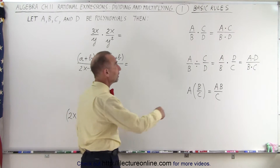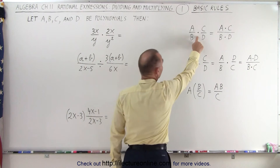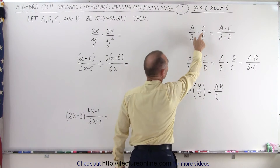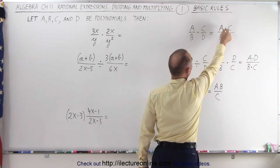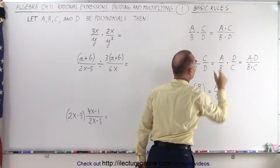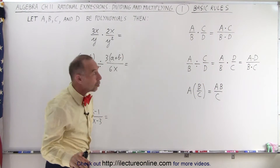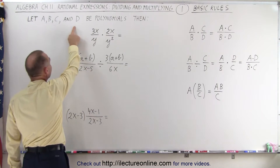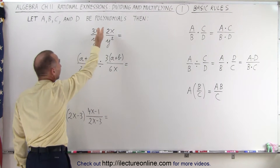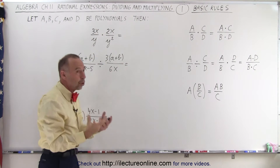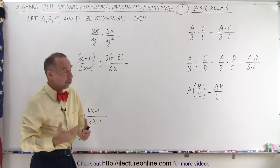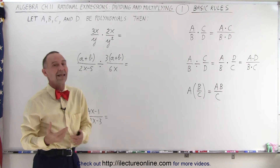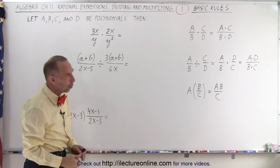First of all, if we have the product of two rational expressions, we simply multiply the numerators together and multiply the denominators together. Note that a, b, c, and d are representative polynomials. So what works for numbers or variables works exactly the same for polynomials.